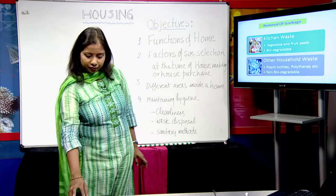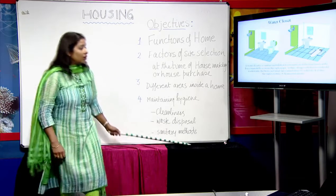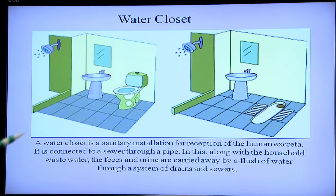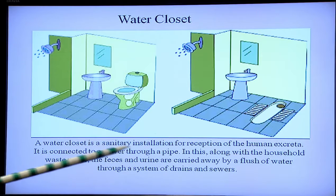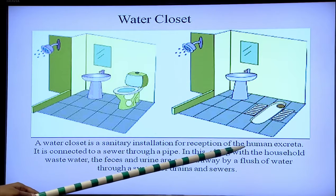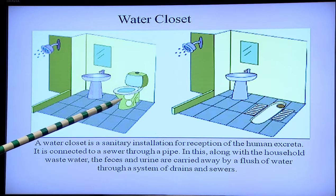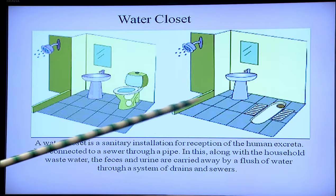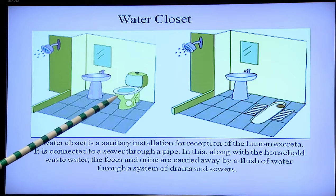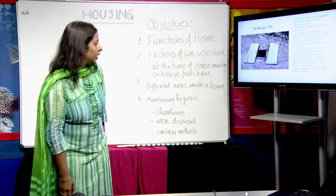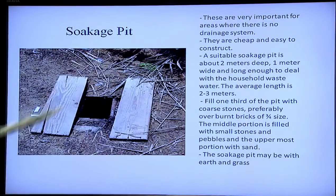The third point in sanitation is water closets — also called WCs. These are sanitary installations used for disposing of human excreta — feces and urine. There are western WCs and Indian WCs. These are used for taking away human feces and urine through sanitary installations, drains, and sewers.